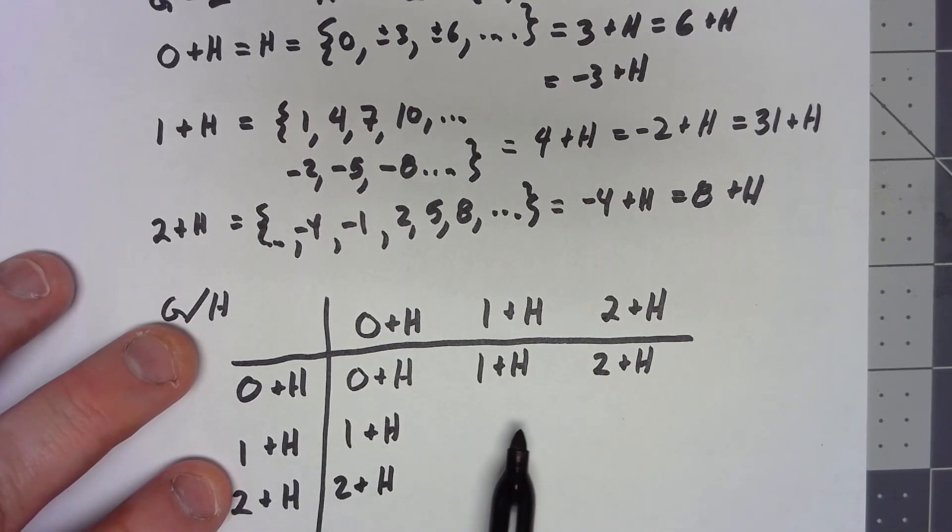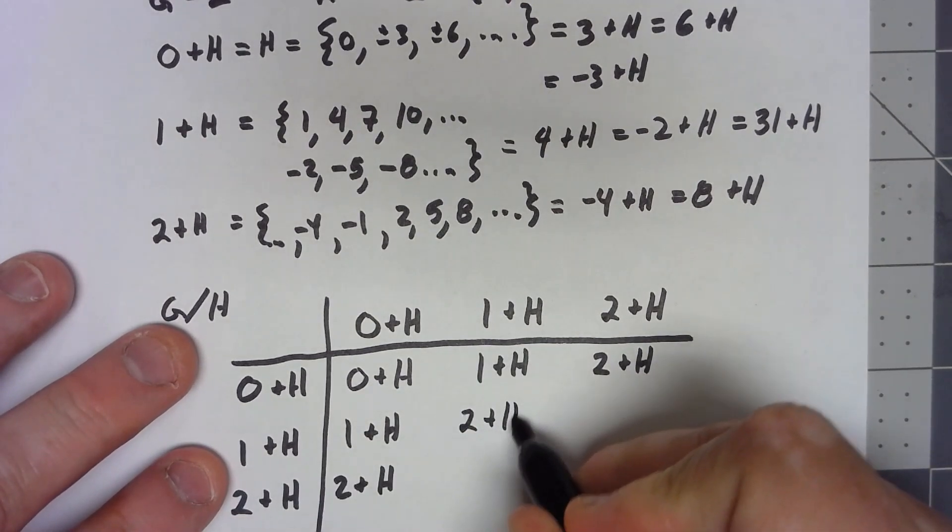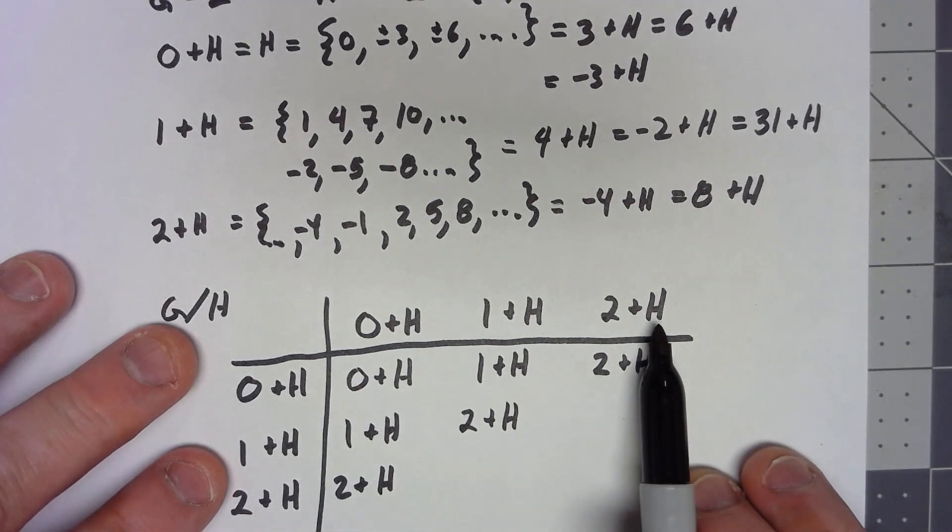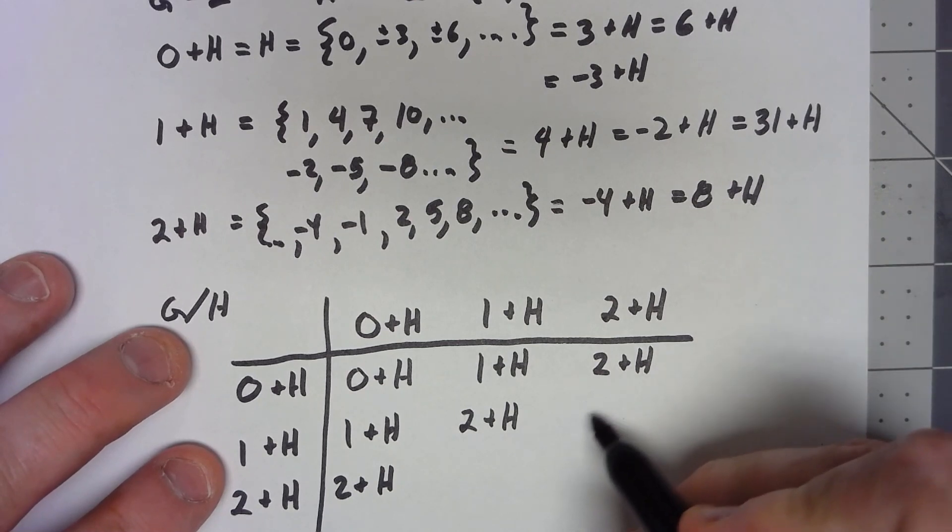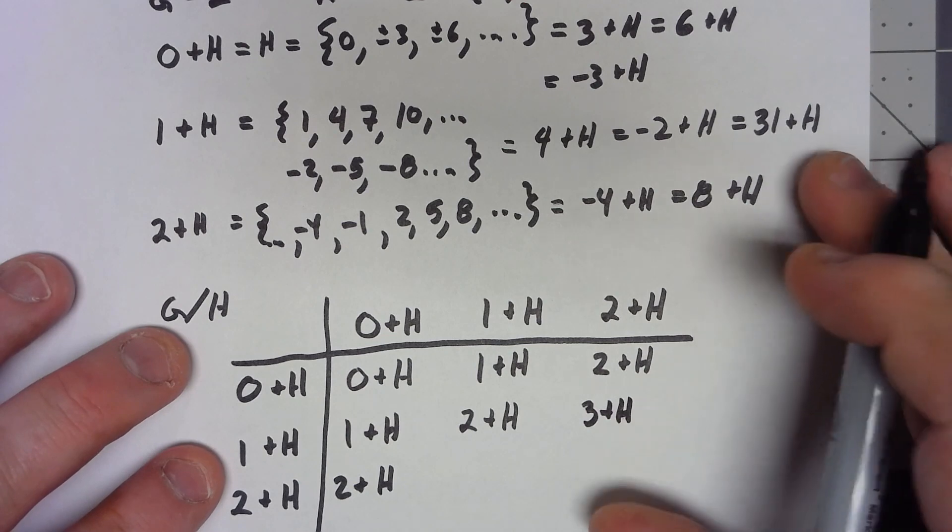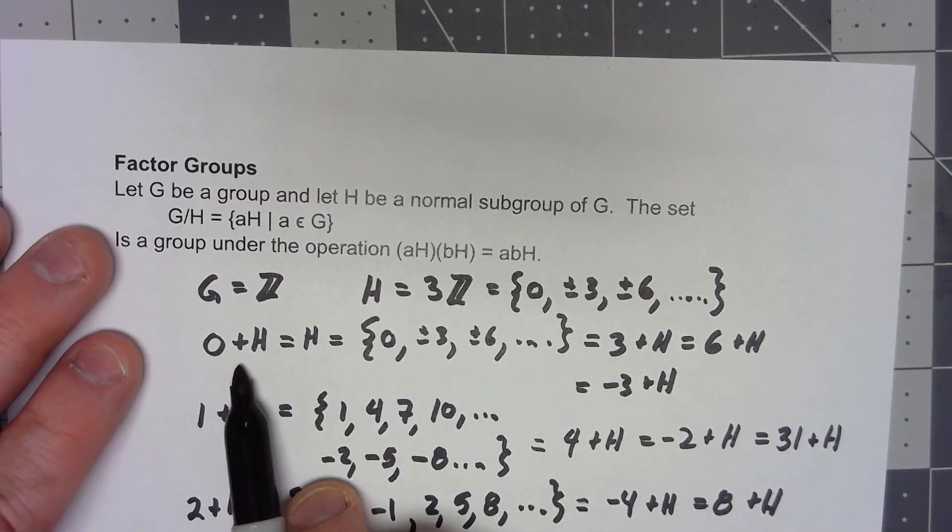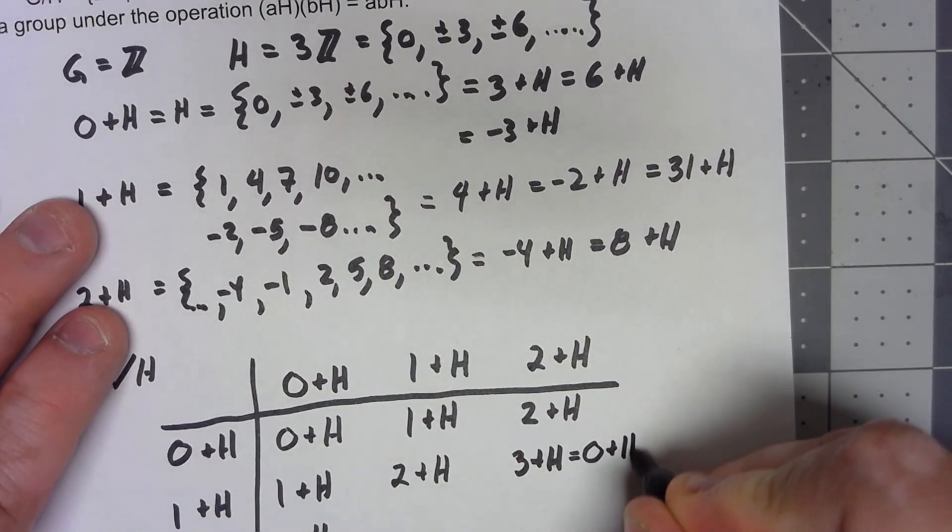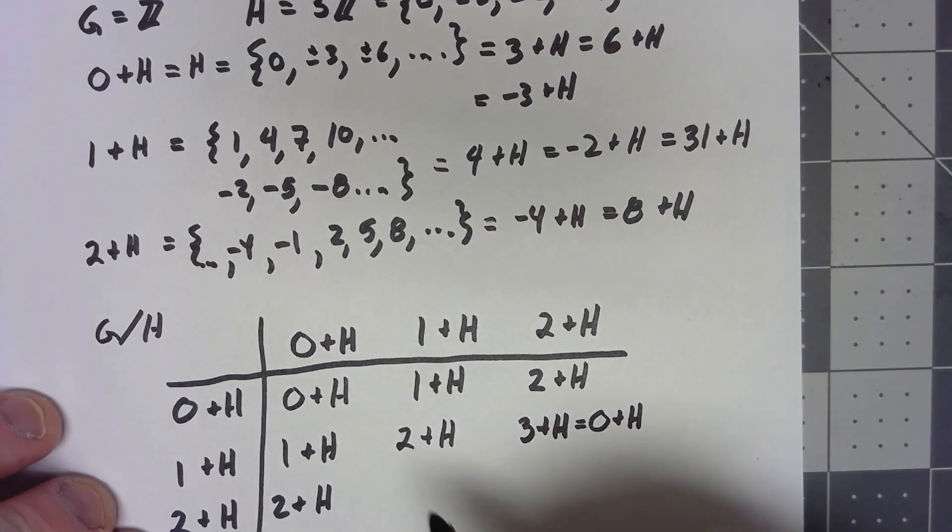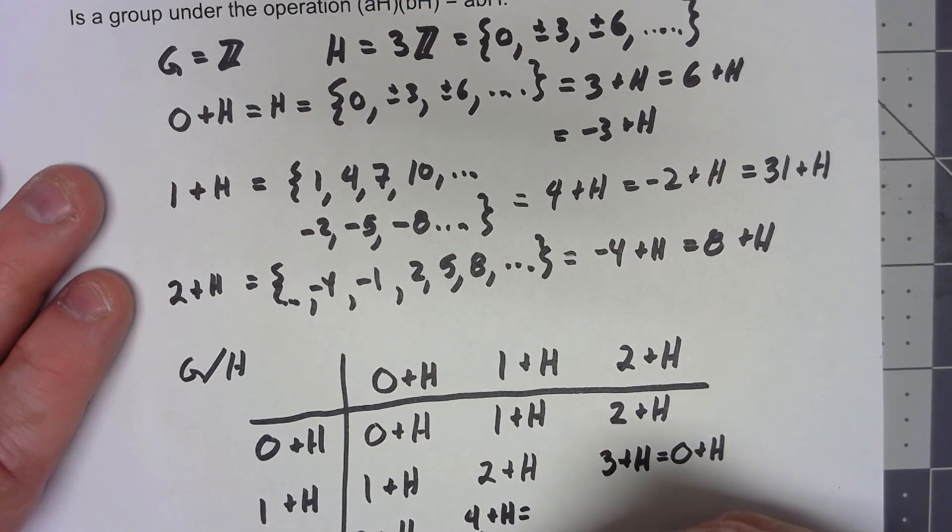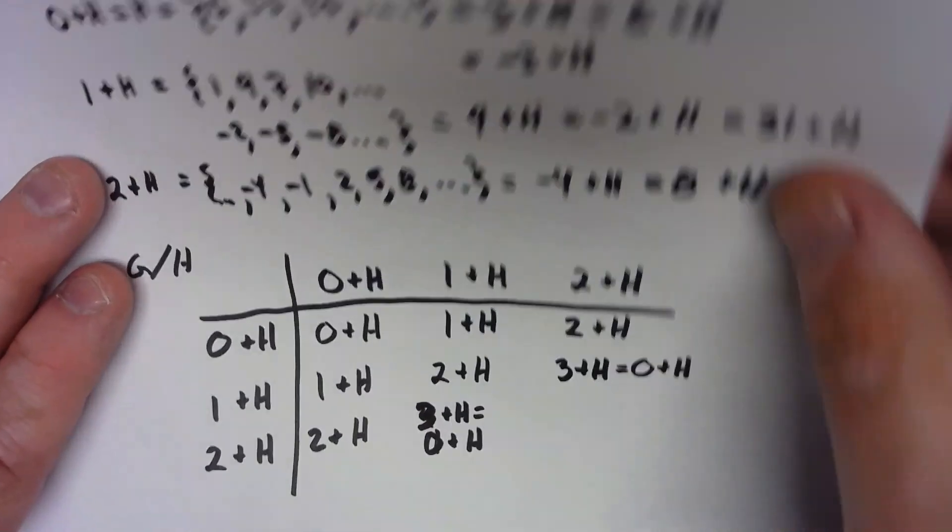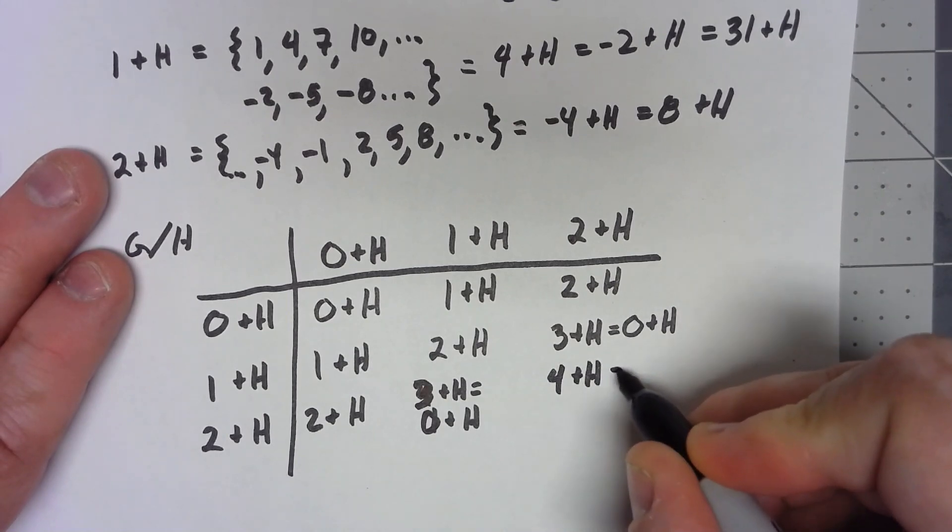Now if I do 1+H times 1+H, 1 plus 1 is 2, so that's going to give me the group 2+H. 1+H times 2+H is, when we do the addition mod 3... 1+H and 2+H is 3+H, but 3+H is the same thing as 0+H. 2+H plus 2+H is 4+H, but 4+H is the same thing as 1+H. That should be 3+H, which is the same thing as 0+H. Sorry about that. 2+H plus 2+H is 4+H, which is the same as 1+H.